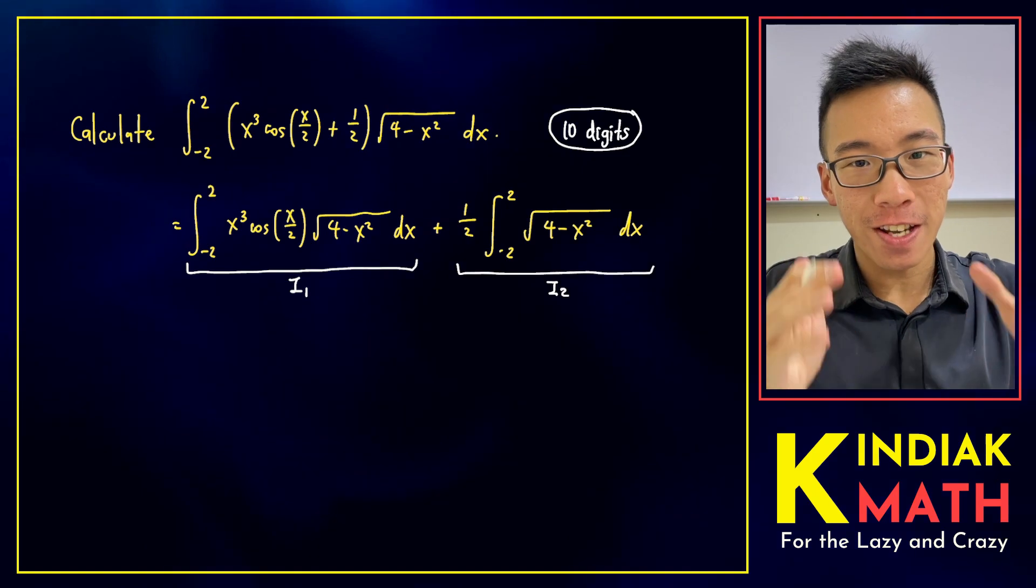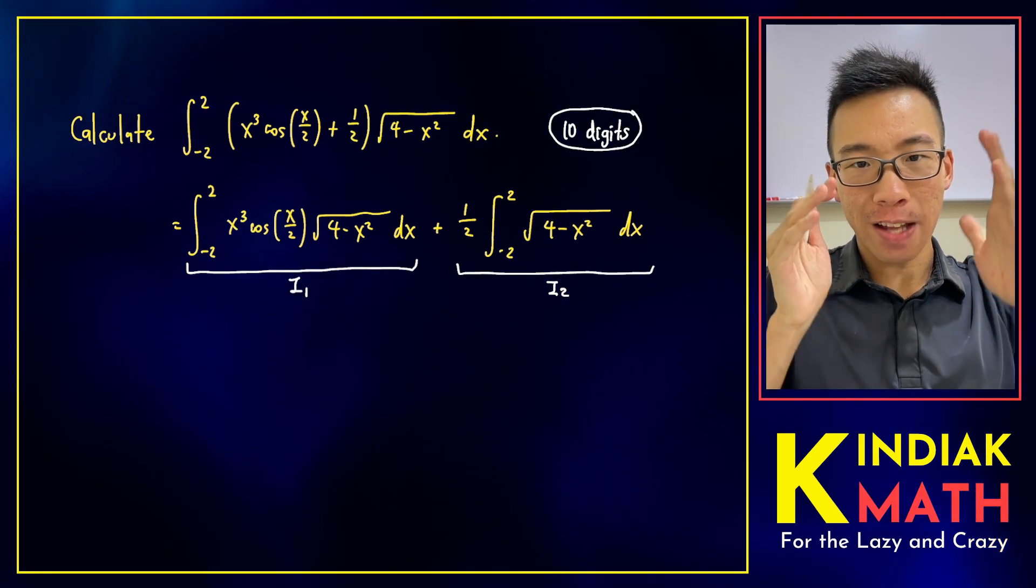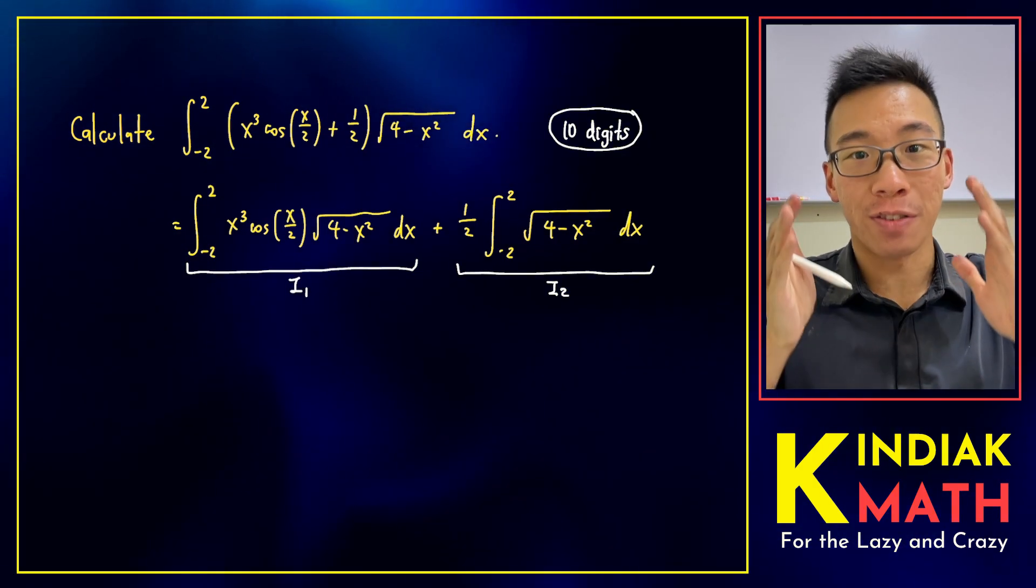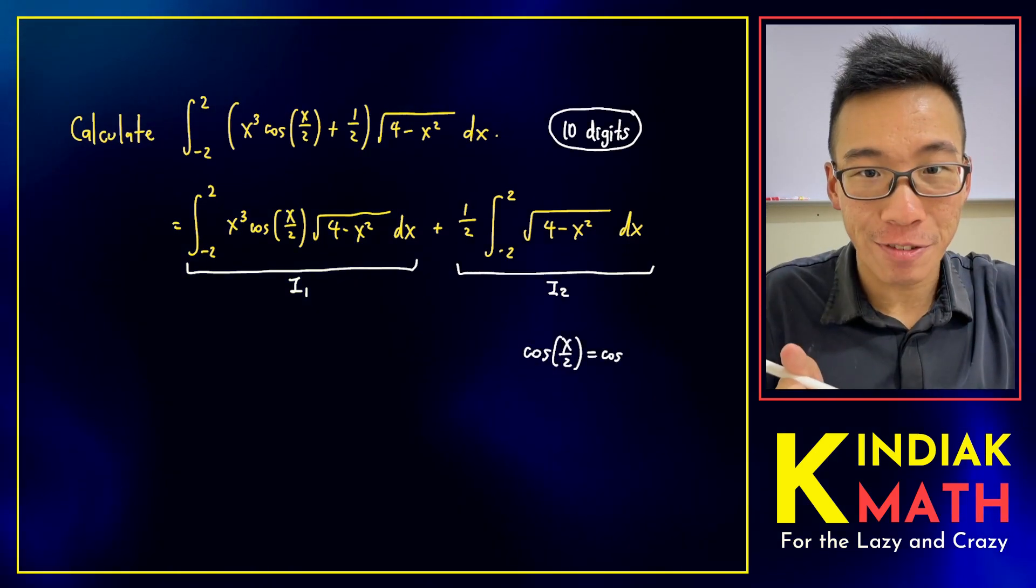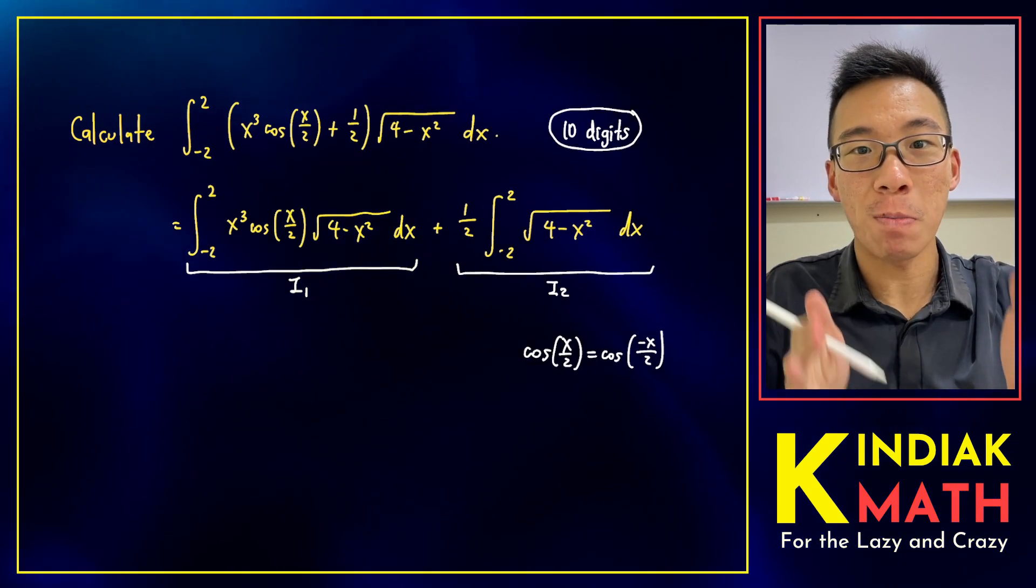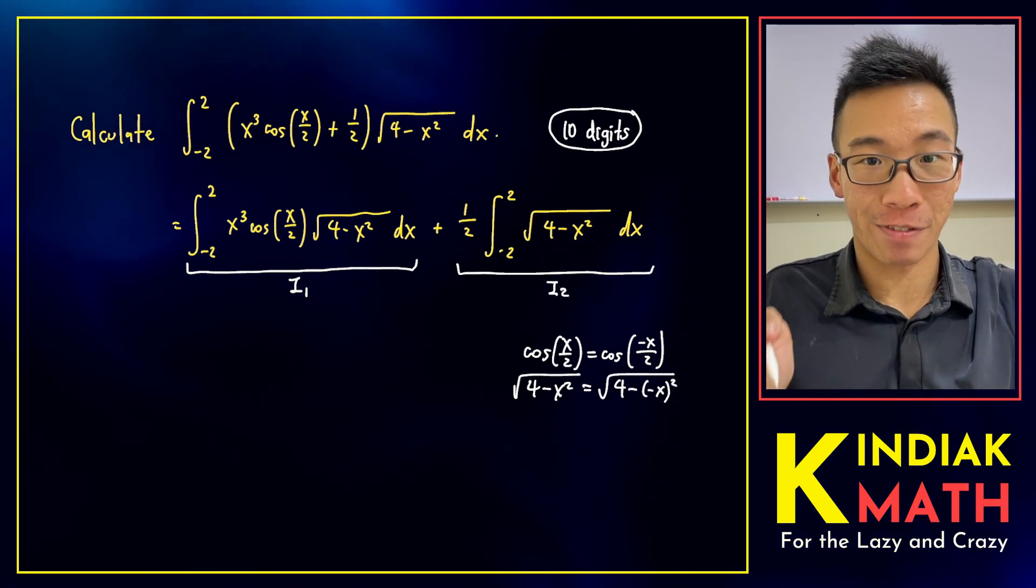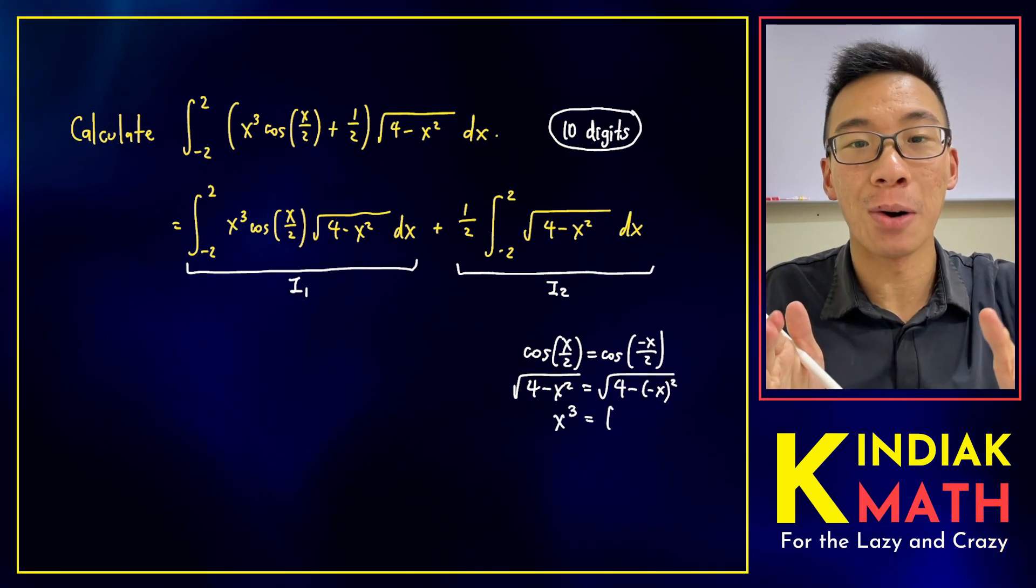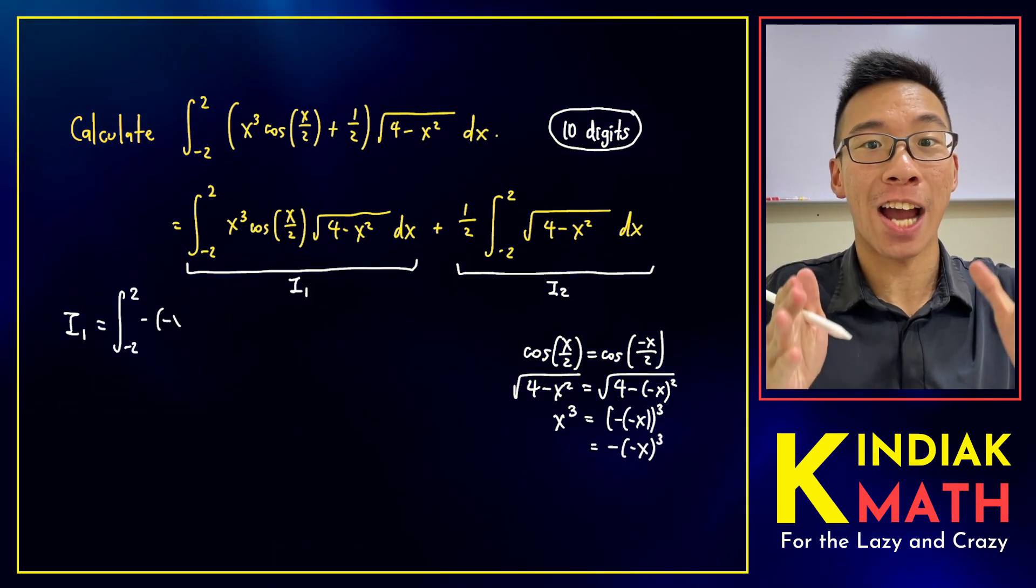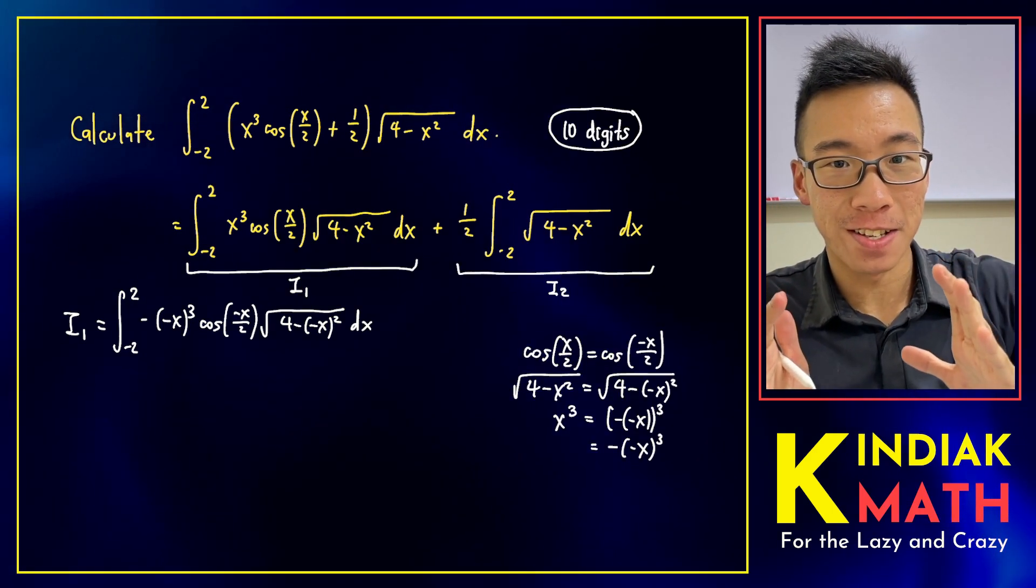Let's start off with the first integral. It looks kind of confusing, but I noticed something interesting about each of the terms. We first noticed that cosine of x over 2 is cosine of negative x over 2, and the square root of 4 minus x squared is actually the same if we replaced x with negative x. For the x cubed term, we can pull out the negative sign. This allows us to rewrite i1 in the following manner, and we see a bunch of negative x's over there.